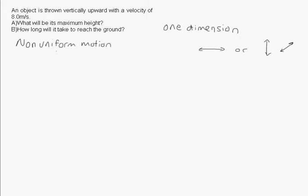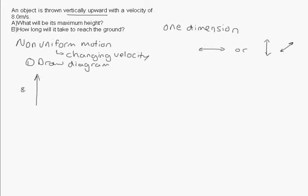Non-uniform motion means that we have a changing velocity. The first thing I always like to do with any of these questions is to draw a diagram. So we have our object here — it's thrown vertically upward with a velocity of 8 meters per second. It's then going to come downward and hit the ground. What I'm asked for is the maximum height.